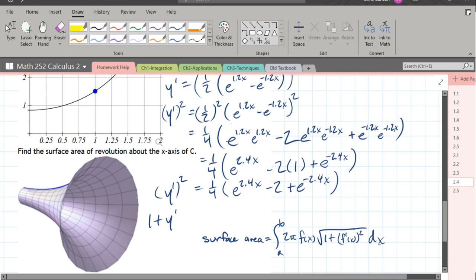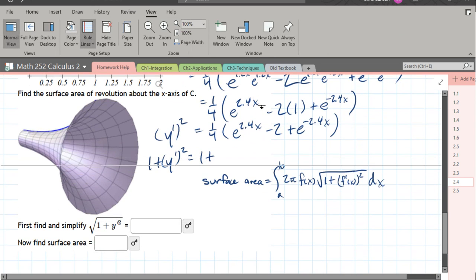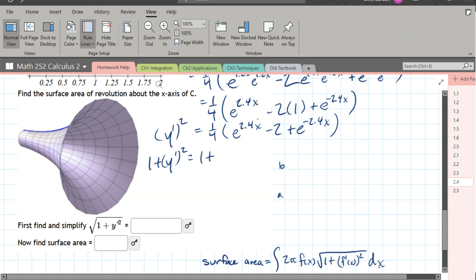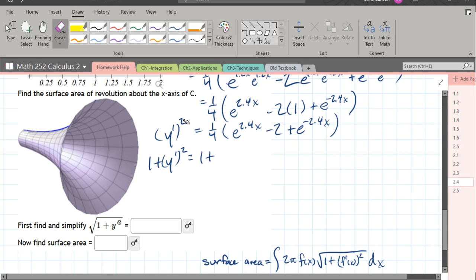Now we're going to do 1 plus y prime squared. So we're going to add 1 to this whole thing. And we're going to create some more space. We'll just push surface area down. We're going to add 1. Now, I can already see we're in fourths here. We'll add 1 as 4 fourths. Plus, now I'm going to distribute the 1 fourth to all three of these pieces. 1 fourth e to the 2.4x minus 1 fourth times 2. Don't think too hard. We're going to add fourths very soon. So we'll just leave it as fourths instead of writing it as a half. Alright, last part, plus 1 fourth e negative 2.4x.